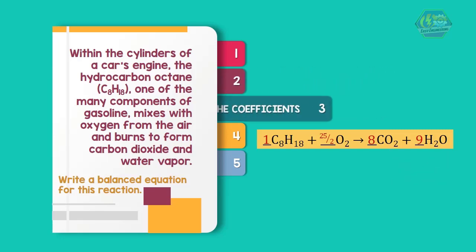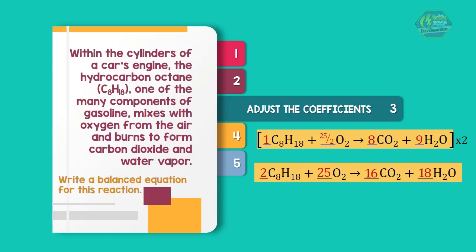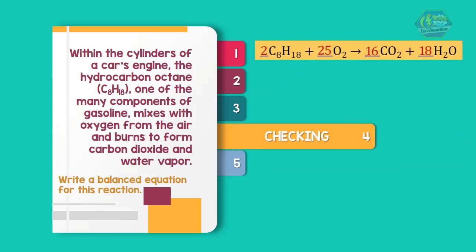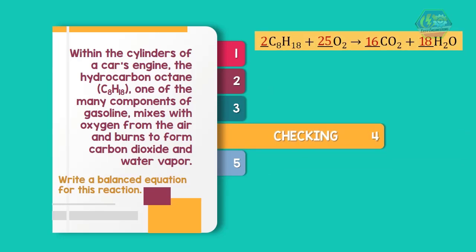Step 4: Checking. For the left side: C equals 2 times 8 moles of C, which equals 16; H equals 2 times 18 moles of H, so 36; O equals 25 times 2 moles of O, so equals 50. For the right side: C is 16, H is 36, and O equals 50.